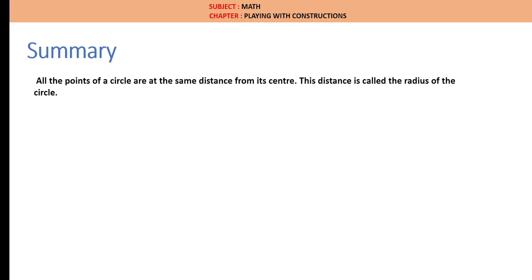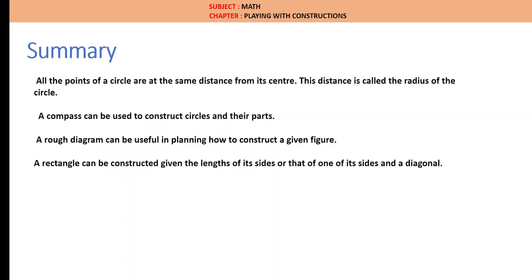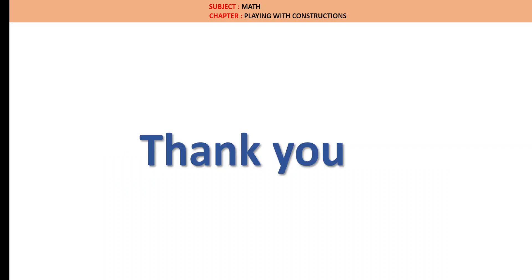Summary. All points of a circle are at the same distance from its center. This distance is called the radius of the circle. A compass can be used to construct circles and their parts. A rough diagram can be useful in planning how to construct a given figure. A rectangle can be constructed given the length of its sides and one of its sides and diagonals. Thank you.